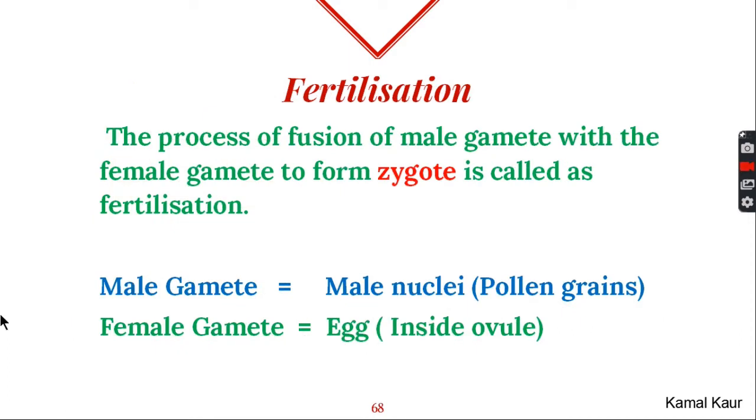Fertilization is basically the fusion of male gamete with the female gamete to form a zygote. Here in this case male gamete is the male nuclei which is present in the generative cell of the pollen grain while the female gamete is the egg which is present in the embryo sac of the ovule.